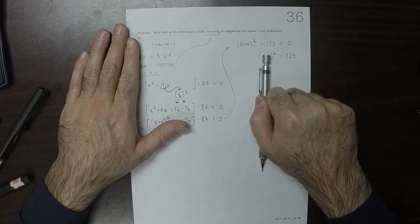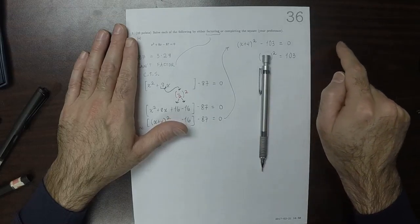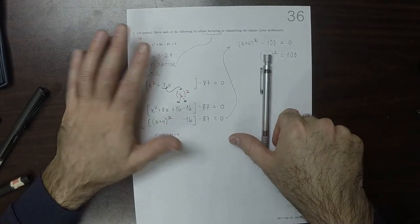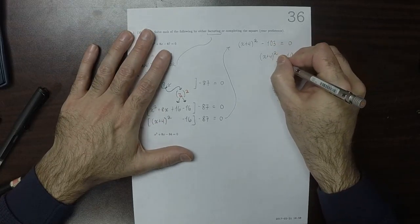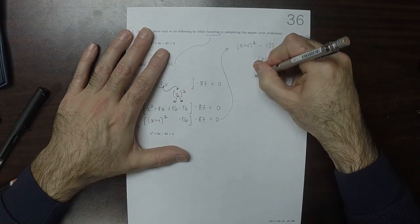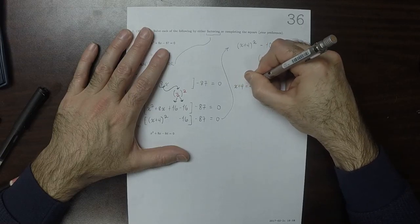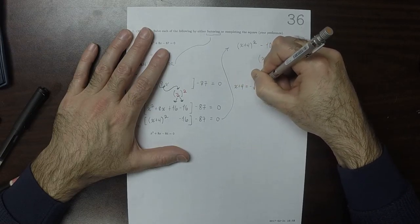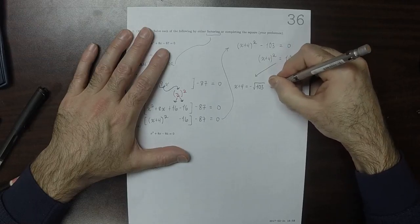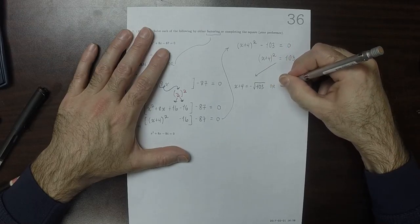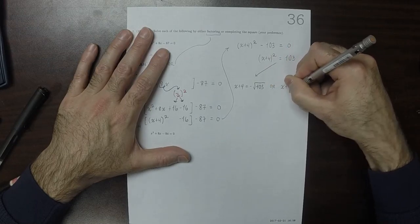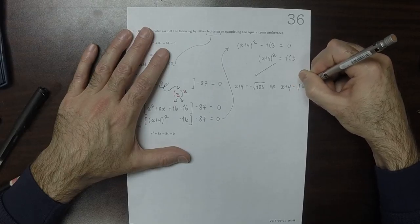So there's two answers that can square to 103, and they are the square root of 103, and negative square root of 103. So this splits into two possibilities. x plus 4 is negative square root 103. Or, x plus 4 is the square root of 103.